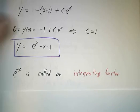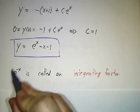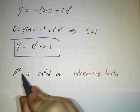Now by the way, this extra factor that we multiplied everything through by, e^(-x), it's called an integrating factor.